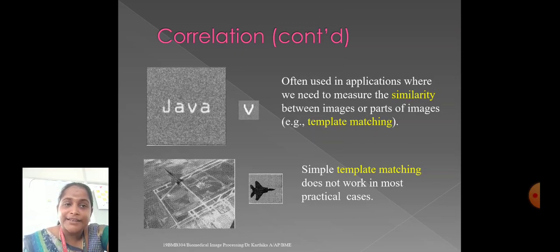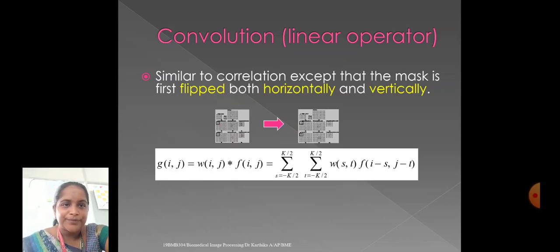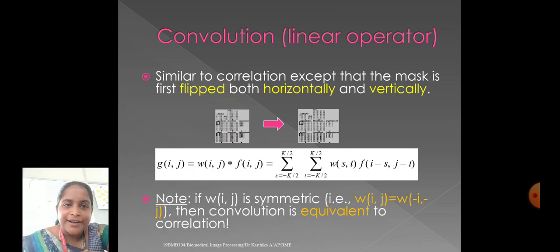And the second example, it is a simple template matching. It does not work in most practical cases. But somewhat it works. And again, we are moving to the convolution linear operator similar to the correlation except that the mask is rotated, flipped both horizontally and vertically. Here, if w of i comma j is symmetric, then convolution is equivalent to the correlation.